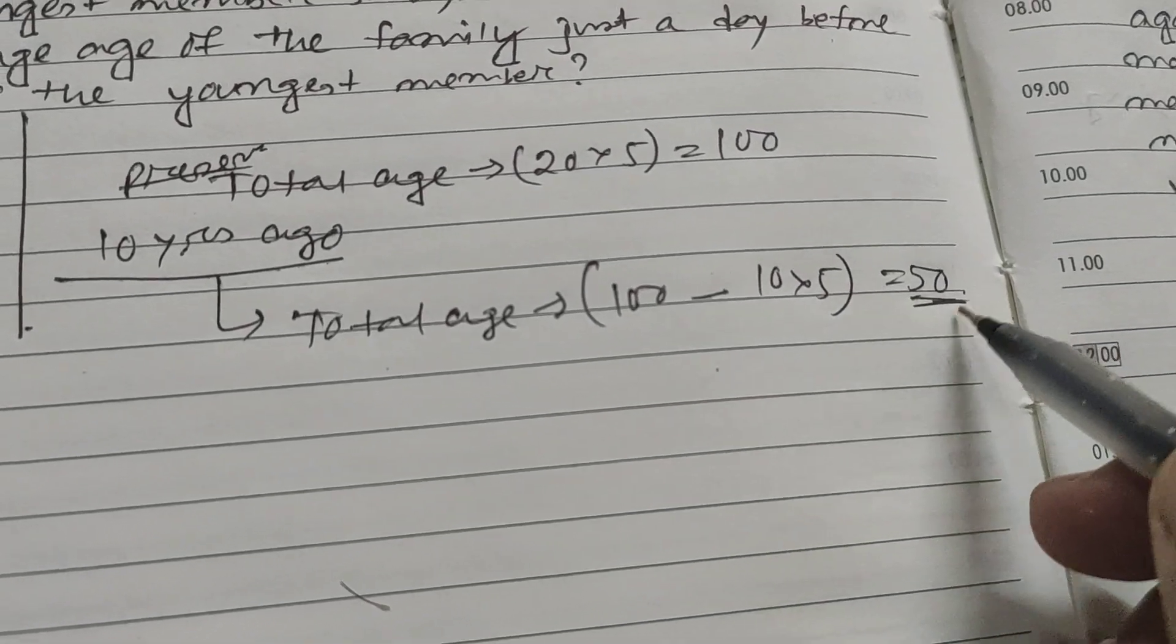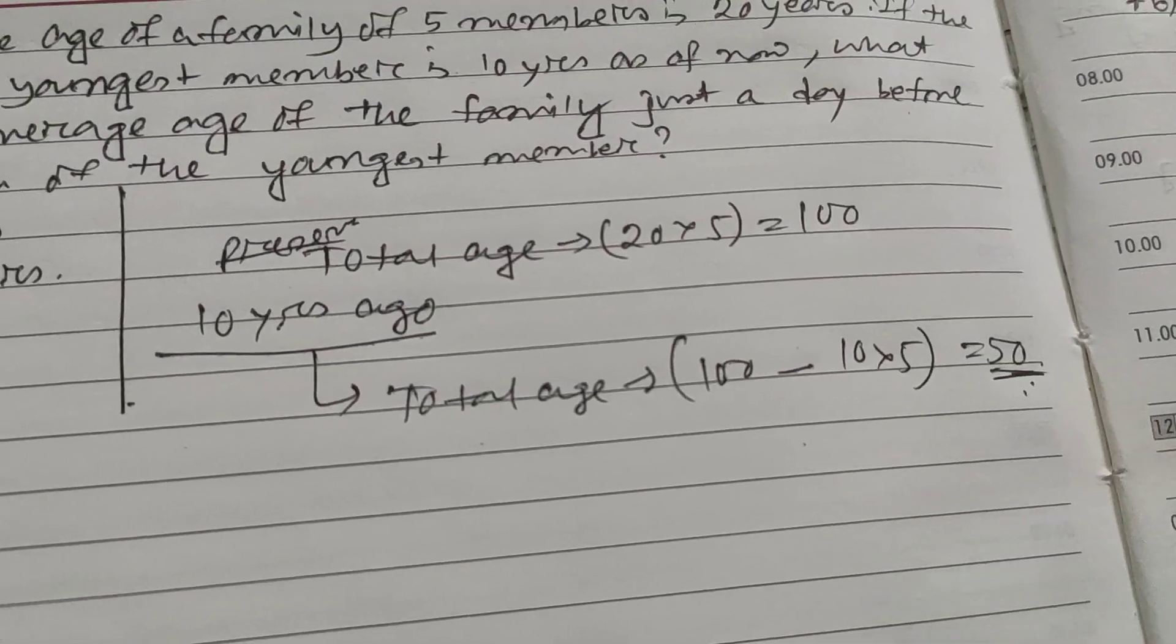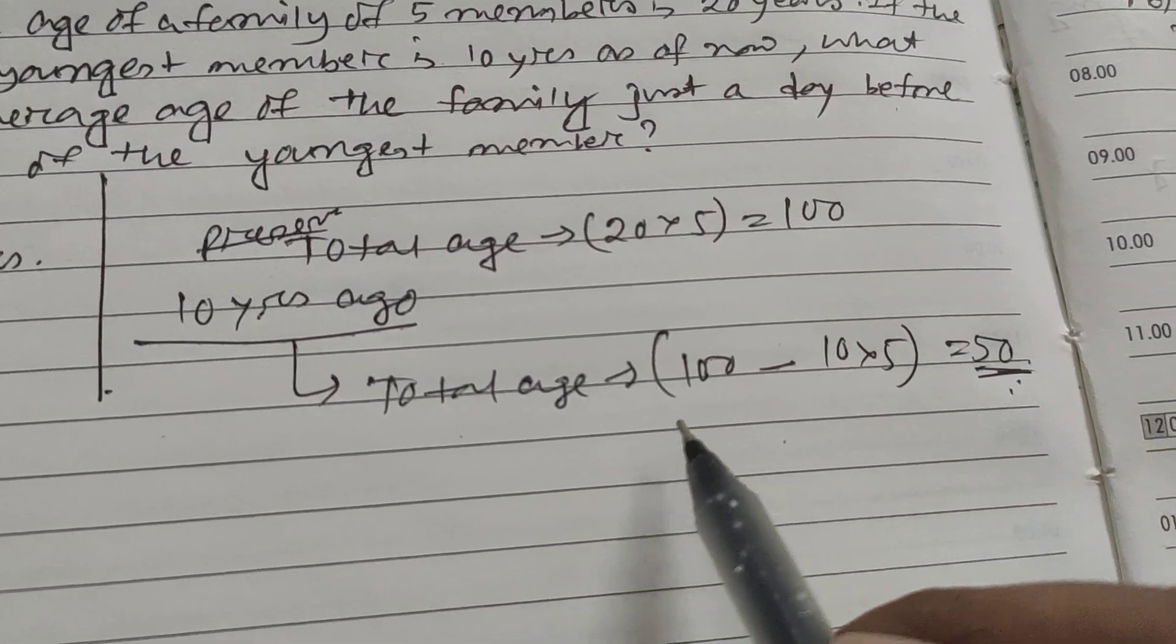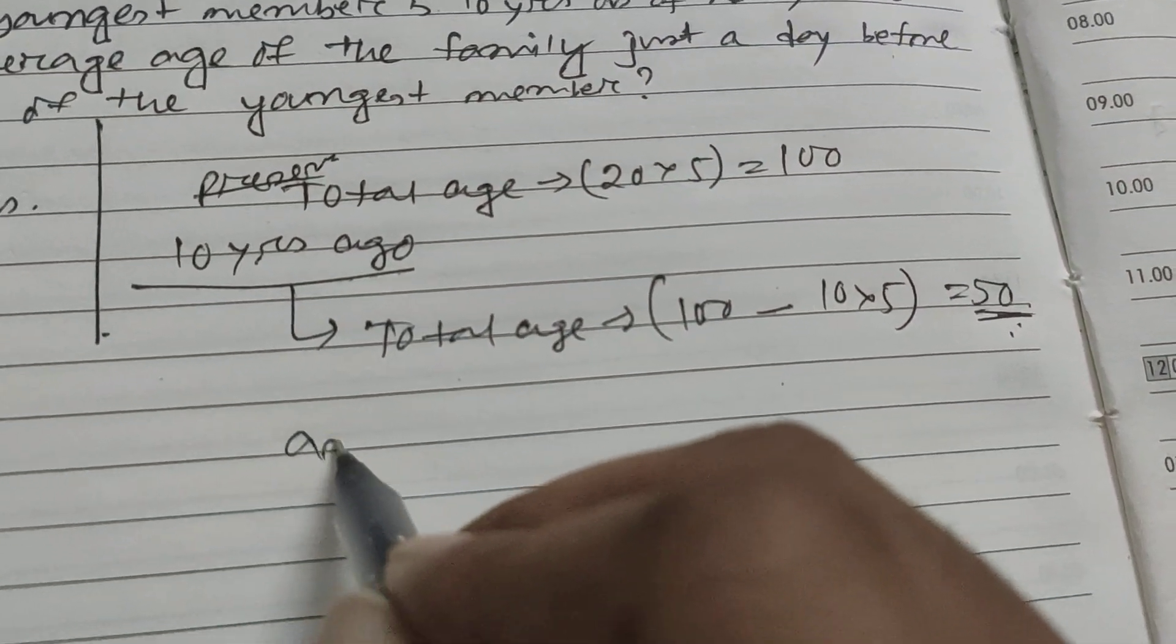This is 50, so this age is the total age of the four members, as at that time the youngest member was not there. So in that time, average age was how much?